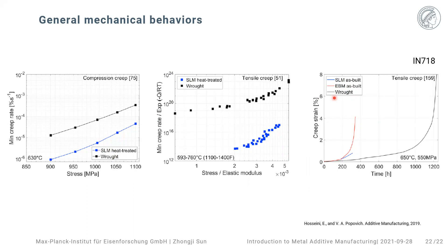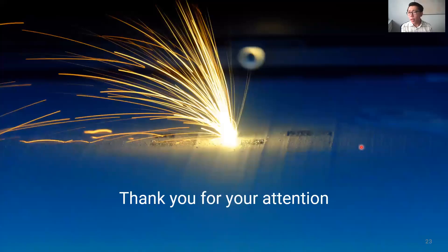For the last slide on creep, I have to give a word of caution: the creep behavior of AM materials is currently still under a lot of debate even within the AM community, simply because due to the complexity of experiments there are not a lot of existing literature on this topic. Some people report that for compression creep tests, AM-built material after heat treatment is somewhat better compared to wrought materials. But at the same time, others report that AM-built material without any annealing or heat treatment is actually a lot worse. There is honestly still a lot of work to be done, especially in the creep area for AM materials.